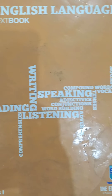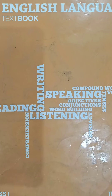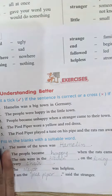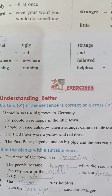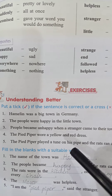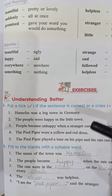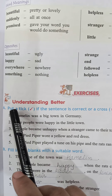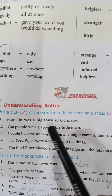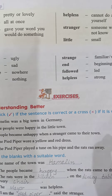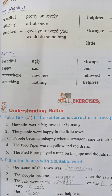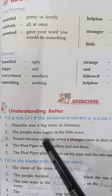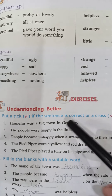Assalamualaikum students, welcome to your English class. This is our tenth lecture of English from your third term for class one. Open your textbooks to page number 115. Today we are going to attempt the unit exercise of unit 14 from your textbook. Part A is: put a tick if the sentence is correct, or a cross if it is wrong. Which sentence is correct, we put a tick; the wrong ones, we put a cross.